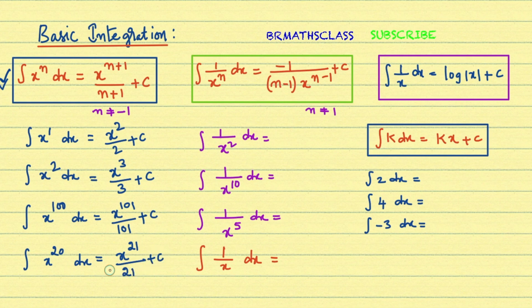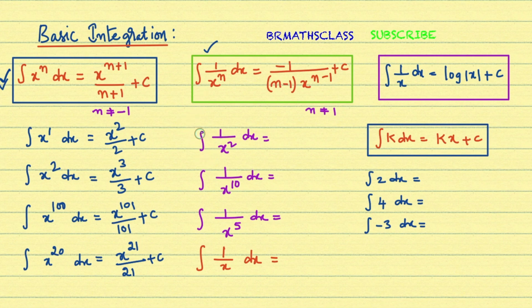Now the second formula: integral of 1 by x power n dx is minus 1 divided by n minus 1 into x power n minus 1, plus c. This formula holds good only when n is not equal to 1. Let's see how to apply this formula.